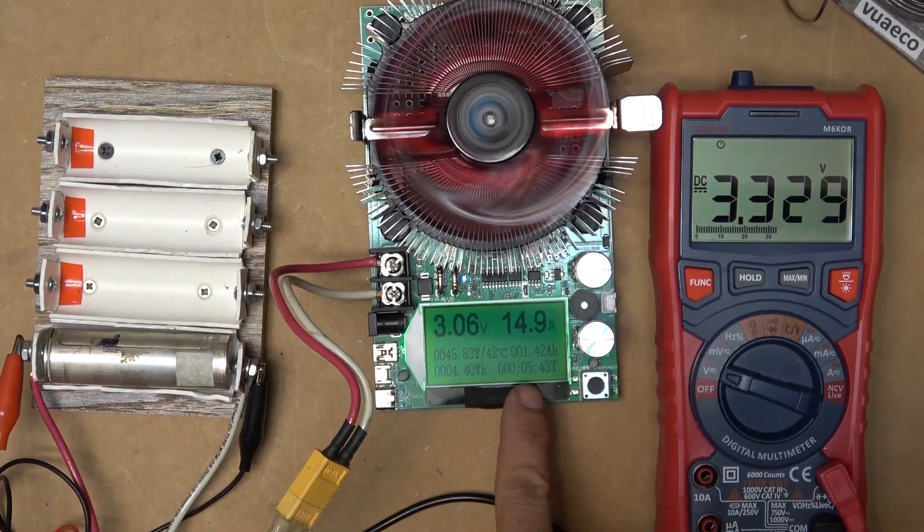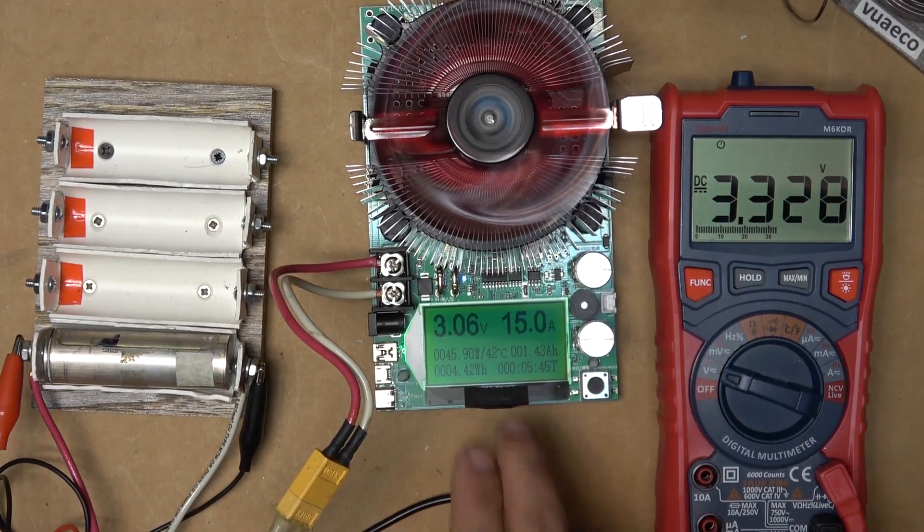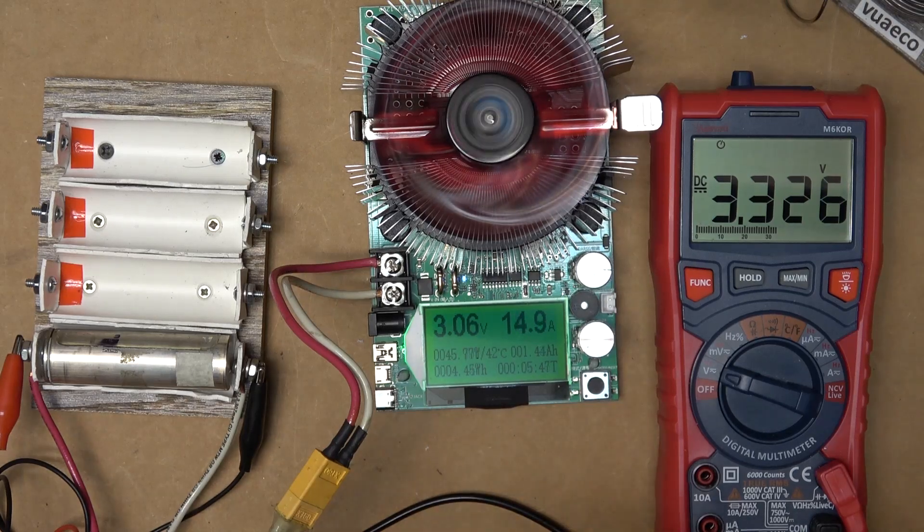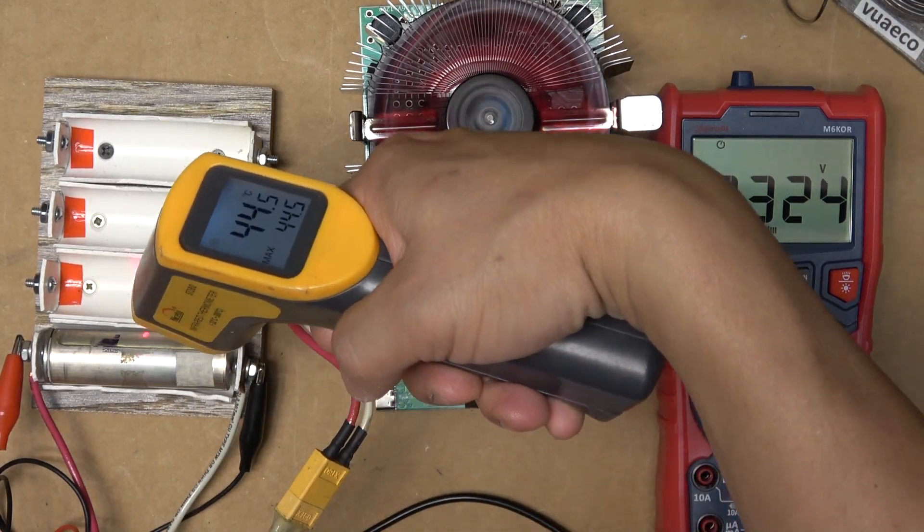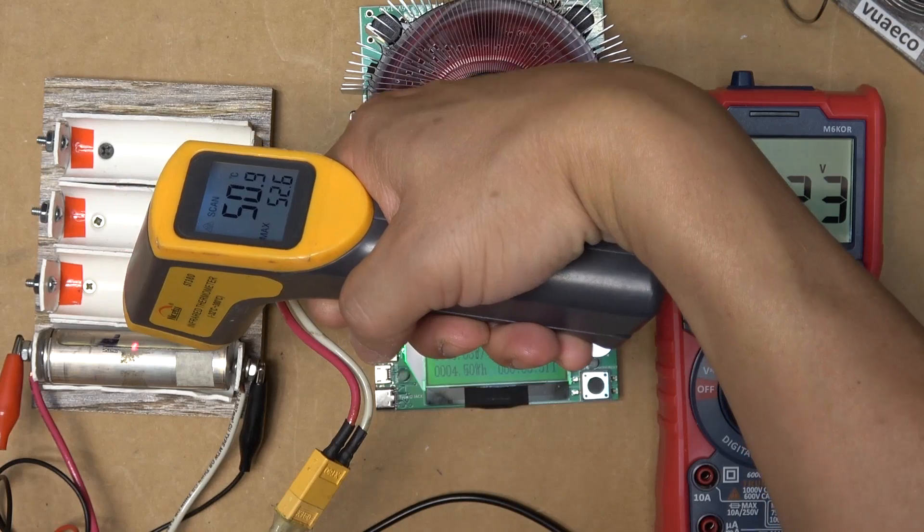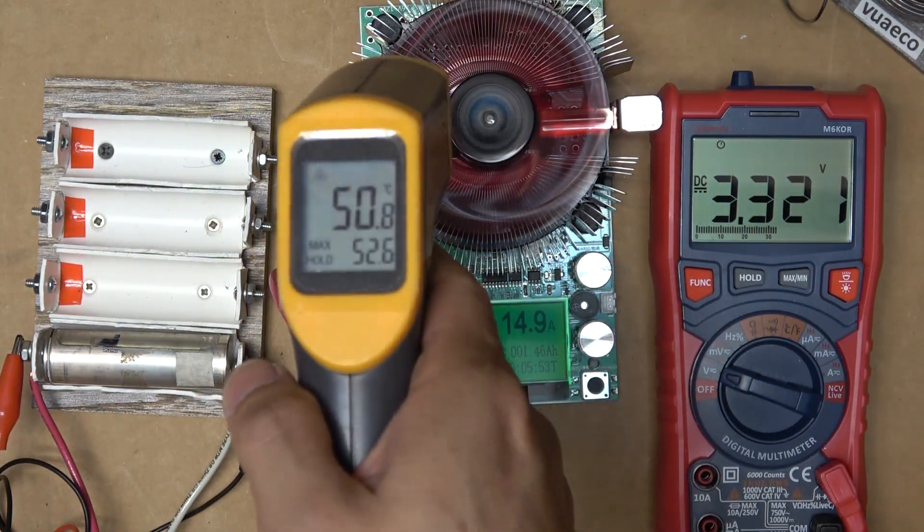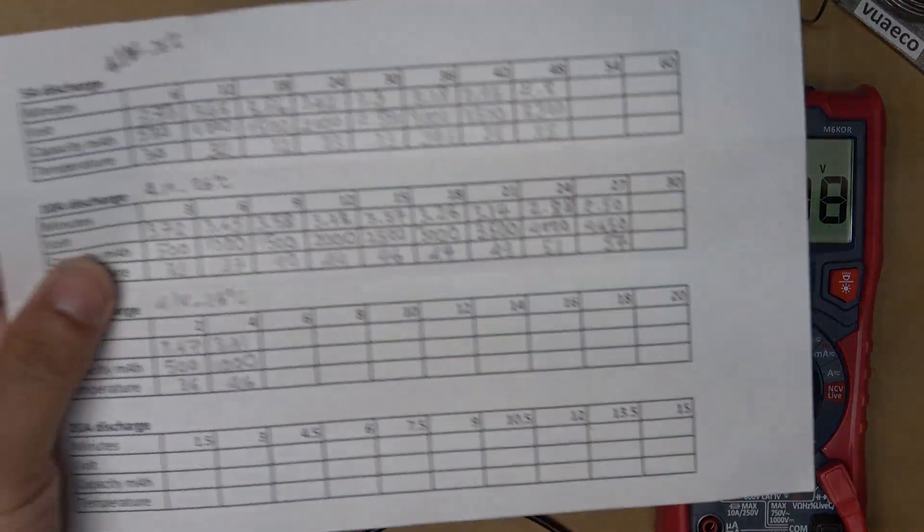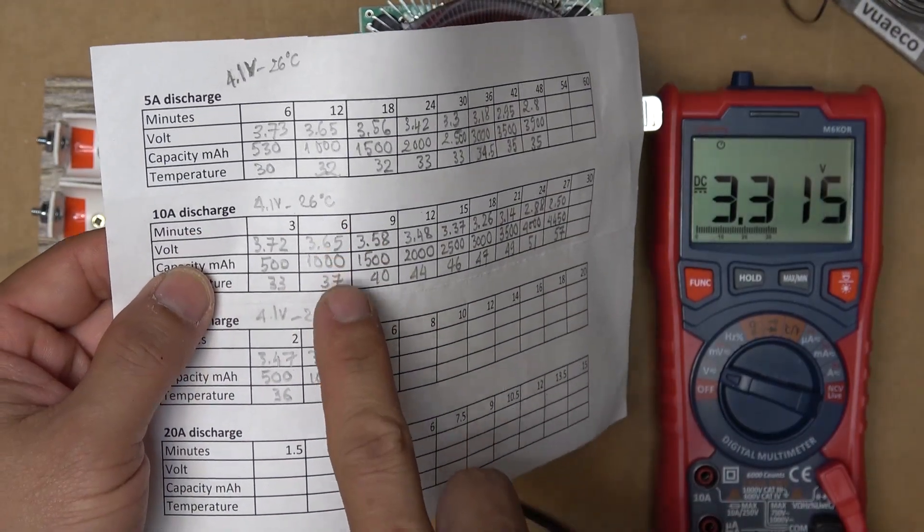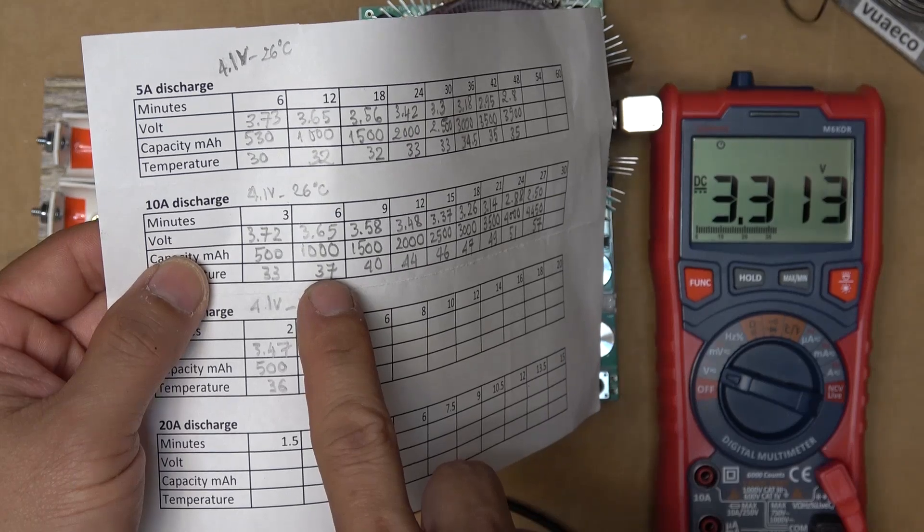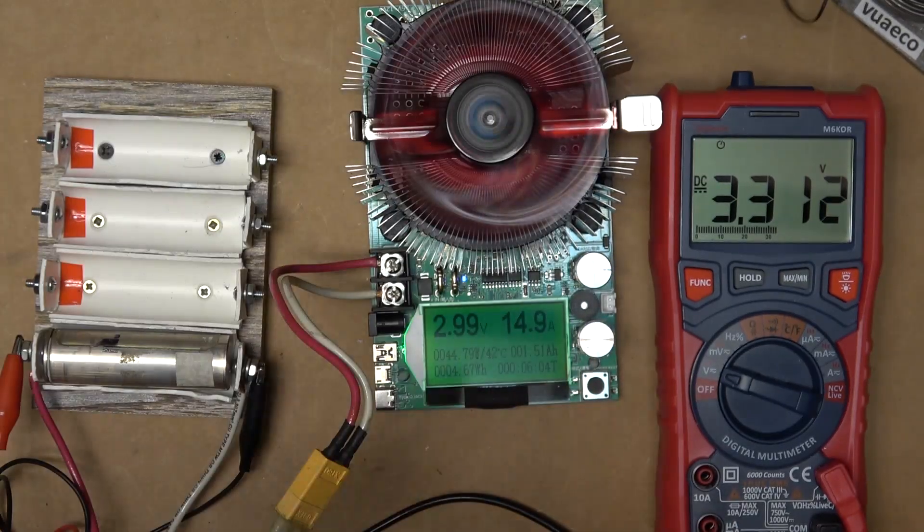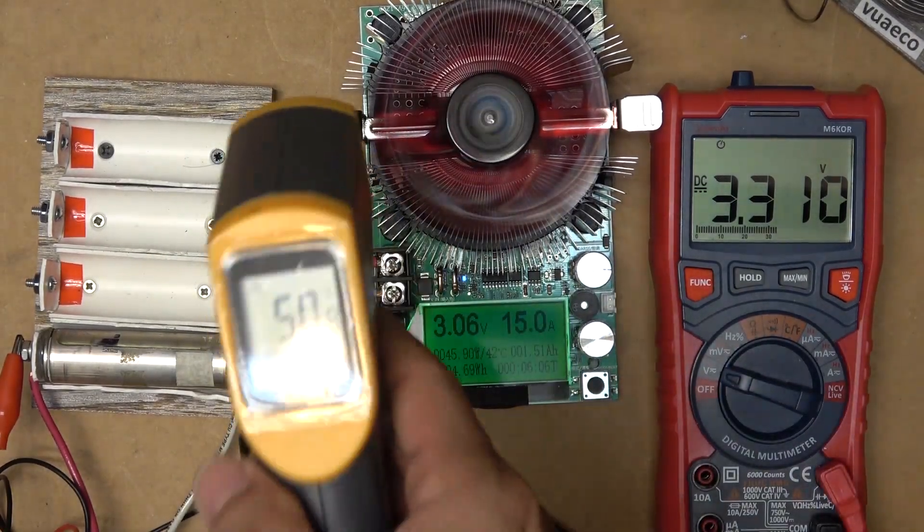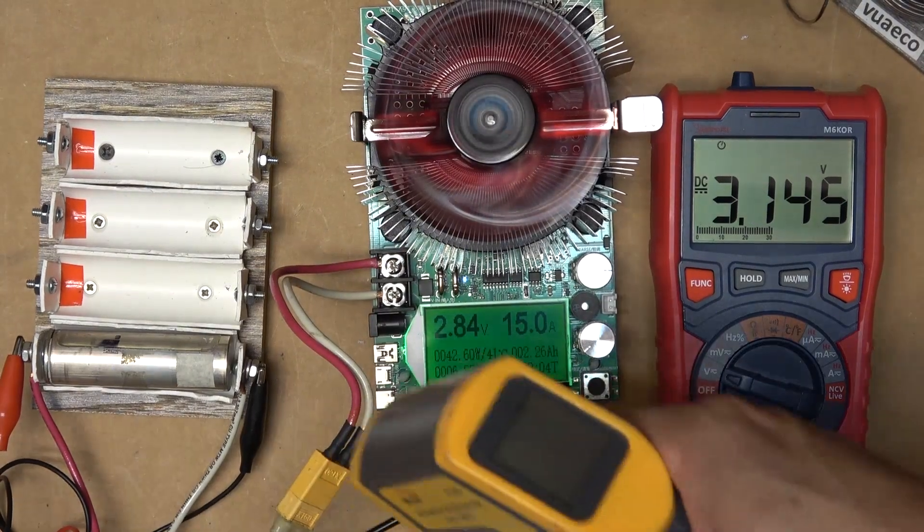Right now, we're at 5 minutes 43 seconds, so almost 6 minutes in. And the temperature is pretty hot right now. 52 degrees Celsius. That's a comparison for the previous test at 10 amps. At 6 minutes, it was only at 37 Celsius. Now, it's 52 Celsius.